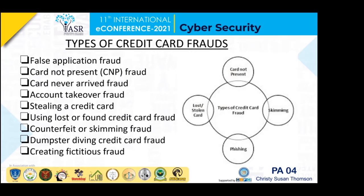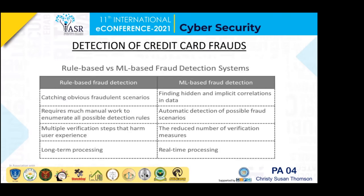In skimming fraud, the thief uses a device known as a skimmer to steal credit card information. When we go to a shopping mall and slide the credit card through this device, the fraudster can capture information from your card. Next is dumpster diving fraud. The last type is 50-tier fraud, where using a computer system or equipment, a person may create an account. When the credit card company tries to contact the account holder after noticing unpaid charges, they find there is no actual owner for the account — this is 50-tier credit card fraud.